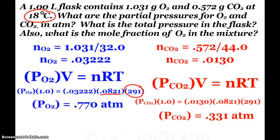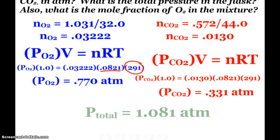Total pressure, add it up. 0.770 plus 0.331, 1.081. And now the mole fraction. Well, we already know how many moles of oxygen there are, and how many moles of carbon dioxide. If I add those two numbers up, then my total moles is 0.04522, total.